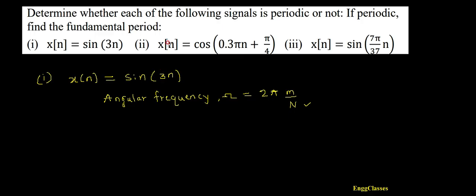Now we will consider the signal sin 3n. To determine whether it is periodic or not, the very first task is to compare. Comparing the given signal sin 3n, I need to compare this with sin omega n. This is the standard signal.